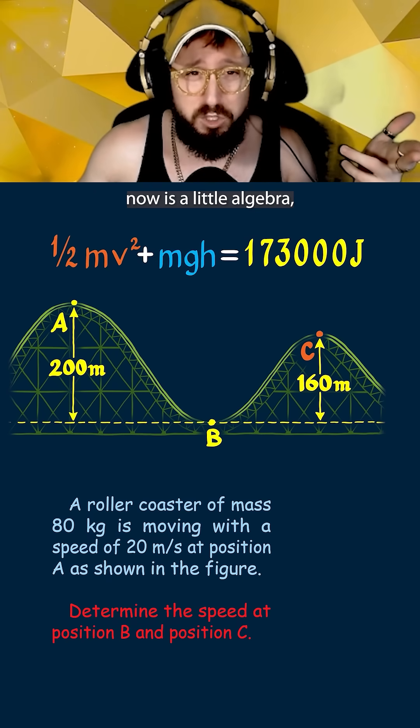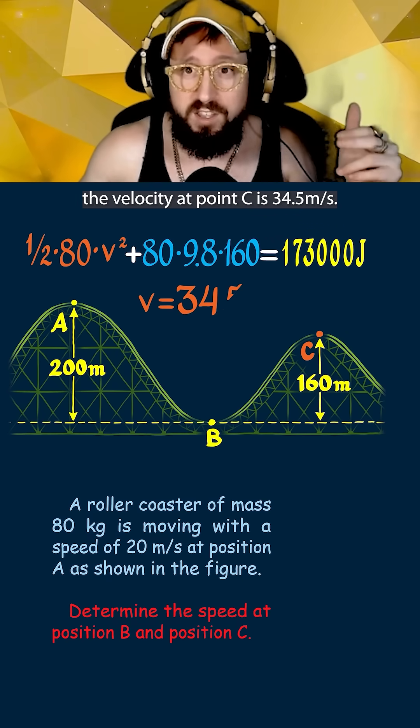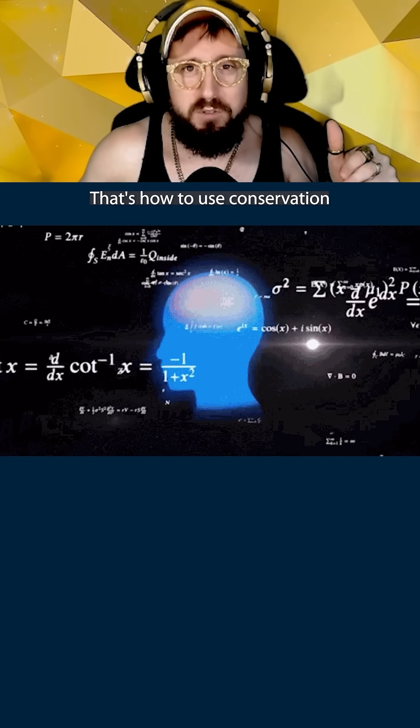All that's left to do now is a little algebra and you'll see that the velocity at point C is 34.5 meters per second. And there you have it that's how to use conservation of energy in physics. Nice!